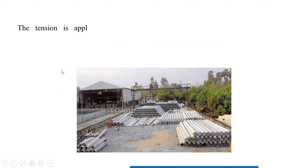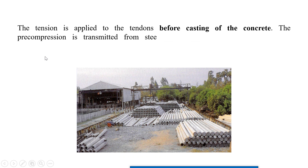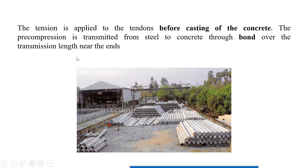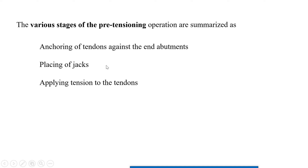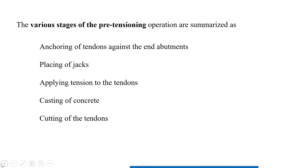The pre-stressing force is imparted to the concrete by bond action — due to contact between the pre-stressing steel and concrete, the compressive force is transferred to the concrete, making it a pre-stressed member. The pre-compression is transmitted from steel to concrete through bond over the transmission length near the ends. Examples include railway sleepers and electric poles. The stages of pre-tensioning are: anchoring the tendons against end abutments, placing the jacks, applying tension, casting the concrete, curing, then cutting the tendons to transfer force to the concrete.